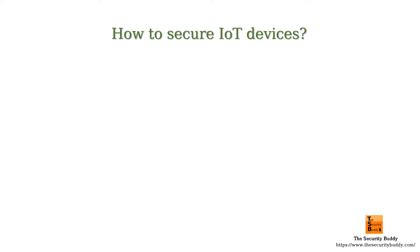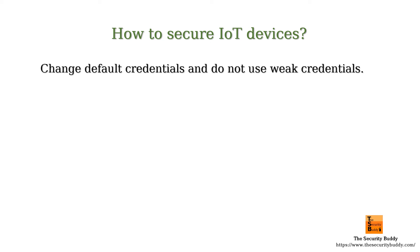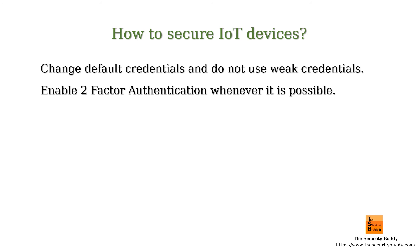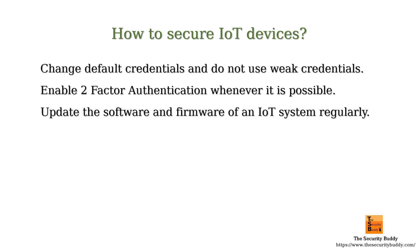So how to secure IoT devices? Always remember to change default credentials in an IoT system and do not configure an IoT system with weak credentials. Enable two-factor authentication whenever it is possible. Update the software and firmware of an IoT system regularly.